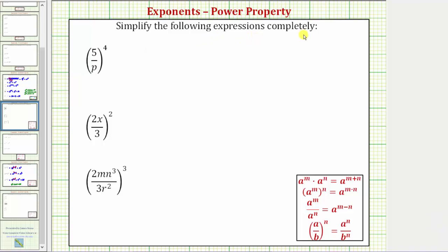We want to simplify the following expressions completely. The first expression is the fraction five over p raised to the fourth power. Looking at the notes below, if we have the fraction a over b raised to the power of n, this is equal to a raised to the power of n over b raised to the power of n. This property tells us that when we have a fraction raised to a power, we must apply that power to both the numerator and denominator.